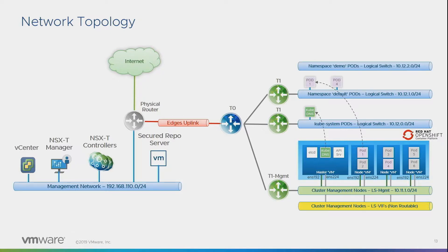When the developer deploys an application to create a pod, you'll get a logical switch. What NCP does is request an IP subnet from NSX-T Manager and configure the switch with all these subnets. Then, of course, you need to connect to the router so that you can exit the logical switch, whether east-west or north-south to the rest of the systems. With that, the pods can communicate.